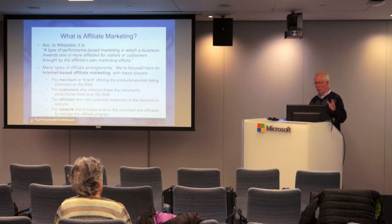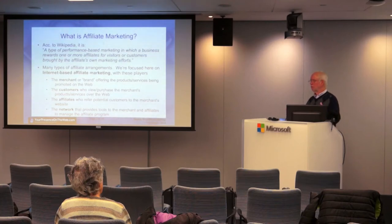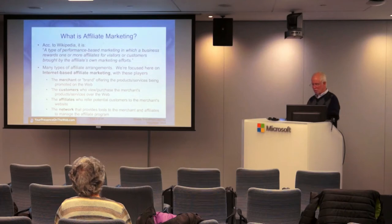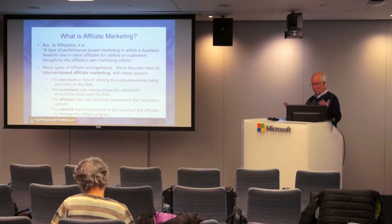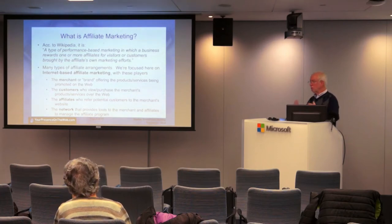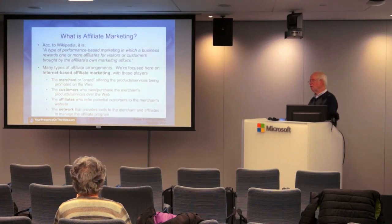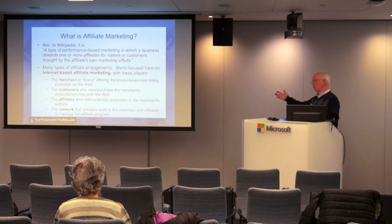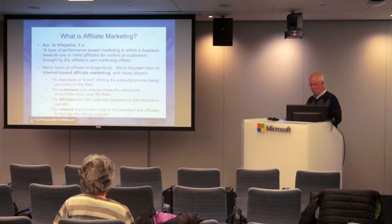The players involved in an affiliate marketing program: first, there's the merchant or brand offering the affiliate program to people interested in partnering with them to help market their products. Then there are the customers, who view and purchase the merchant's products over the web. The affiliates themselves refer potential customers to the merchant sites. And then there's the network — a set of tools that keep track of who's made commissions, what the commissions were made on, and provide, for example, banner graphics you can post on your website so customers can click through to the merchant website.